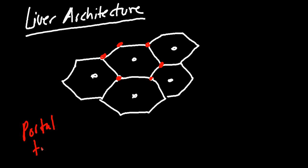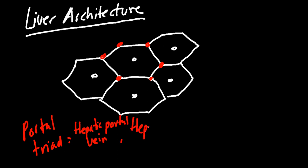A portal triad is made up of three things: the hepatic portal vein, which receives its flow from the intestines — something absorbed in the intestine goes to the portal circulation and eventually to the hepatic portal vein — the hepatic artery, giving the liver two blood supplies, and a bile duct component. So three vessels at each location make up our portal triad.